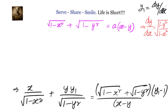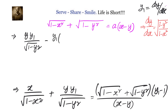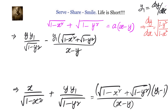Now take all y1 terms to the left hand side and remaining terms to the right hand side. On the left: y·y1 over √(1 minus y²) minus [√(1 minus x²) plus √(1 minus y²)] times y1 divided by (x minus y). On the right: minus x over √(1 minus x²) minus [√(1 minus x²) plus √(1 minus y²)] divided by (x minus y).